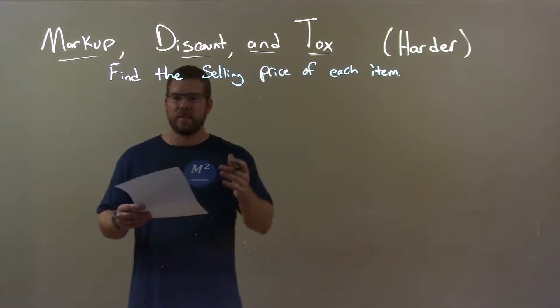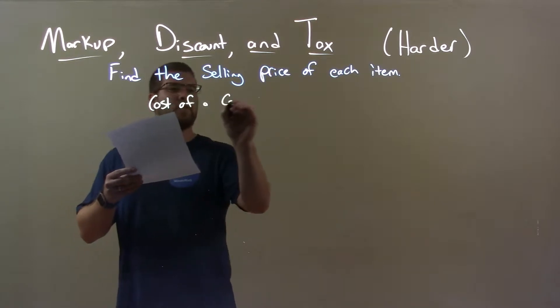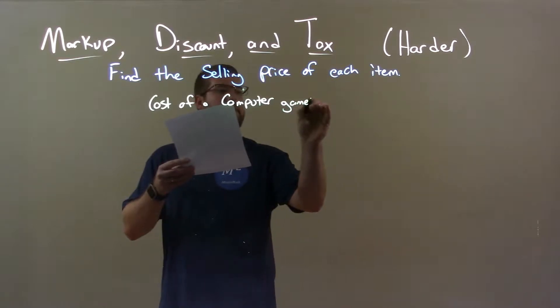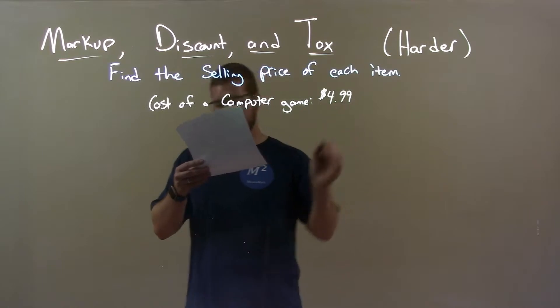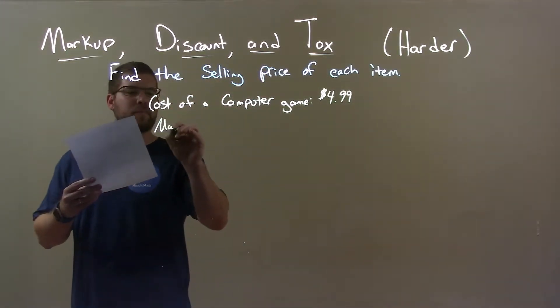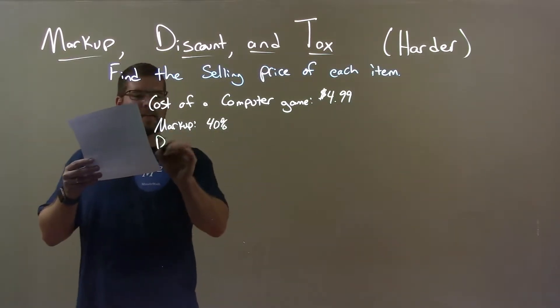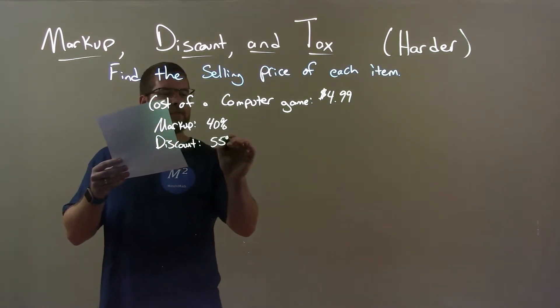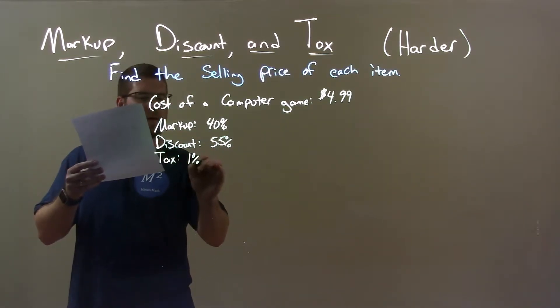So, if I was given this item, the cost of a computer game is $4.99. Its markup is 40%, its discount is 55%, and its tax is 1%.